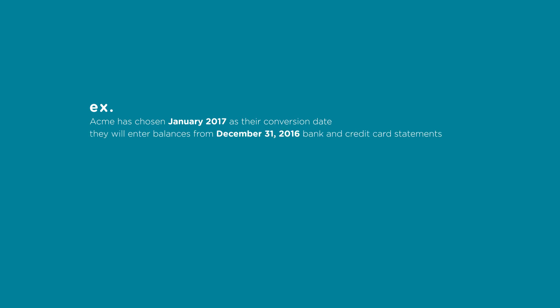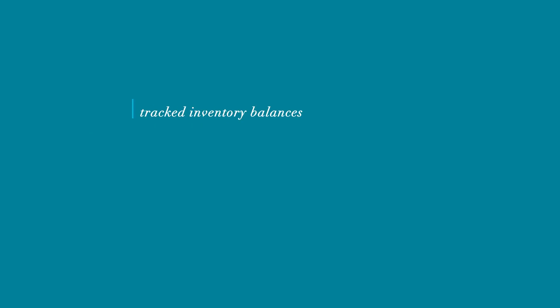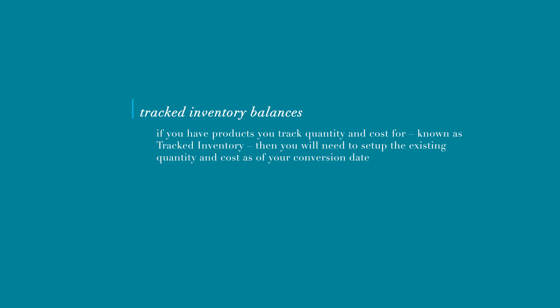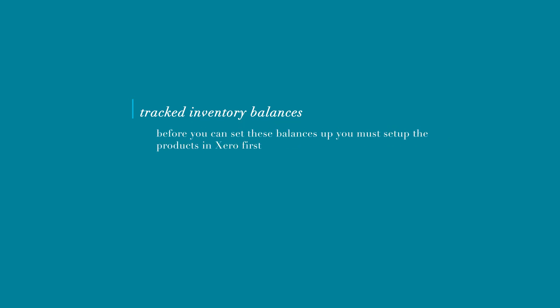Acme will enter balances from their December 31st, 2016 bank and credit card statements. Since the statement date, December 31st, is prior to their conversion date of January 2017, Acme will use the ending balance that appears on their December bank and credit card statements. The fifth item is tracked inventory balances. If you have products that you track quantity and cost for — known as tracked inventory — then you will need to set up the existing quantity and cost as of your conversion date. Before you can set these balances up you must set up the products in Xero first. Once you have done that then you are ready to enter opening balances for tracked inventory items.